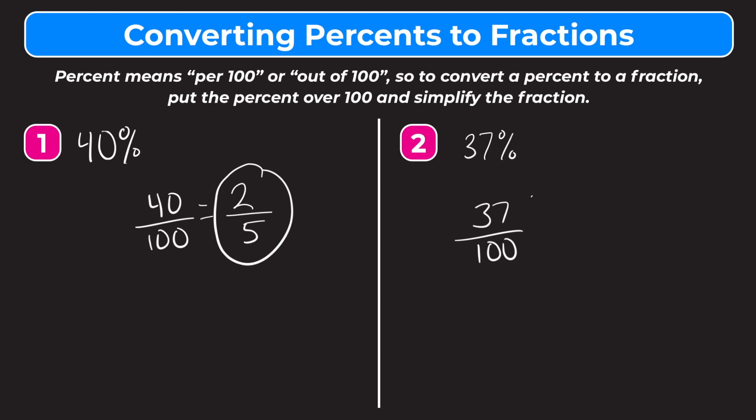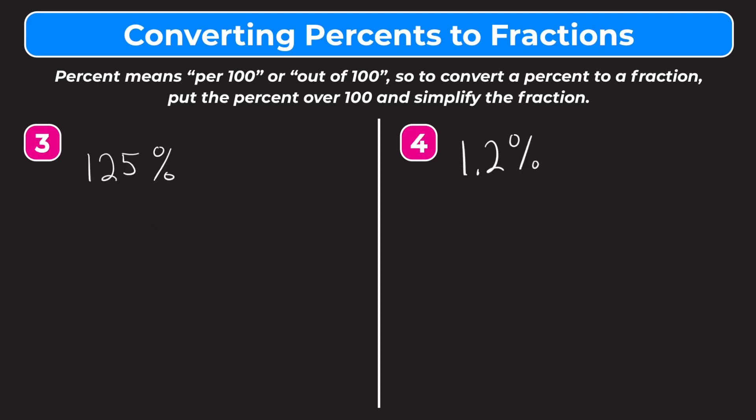Let's take a look at number three. We have 125%, so this percent is greater than 100, which is okay. That just means the fraction we convert to is going to be an improper fraction, and we can convert that into a mixed number if asked. Let's go through our steps. We put the percent 125 over 100, so we have 125/100. Then we simplify the fraction. We can simplify even though this is an improper fraction. Both the numerator and denominator are divisible by 25. So if we do that, we get 5 because 125 divided by 25 is 5, and 100 divided by 25 is 4. So we have 5/4.